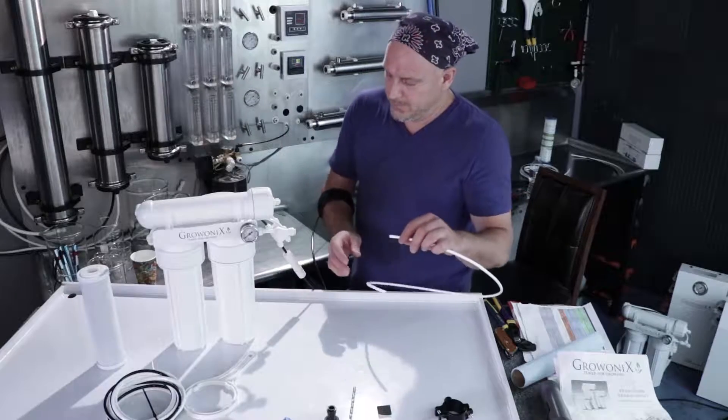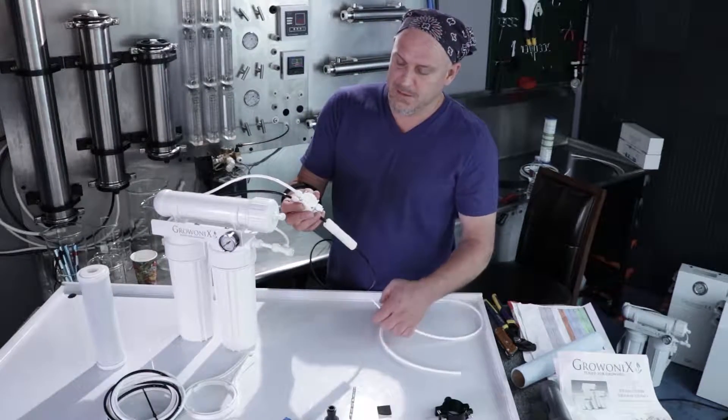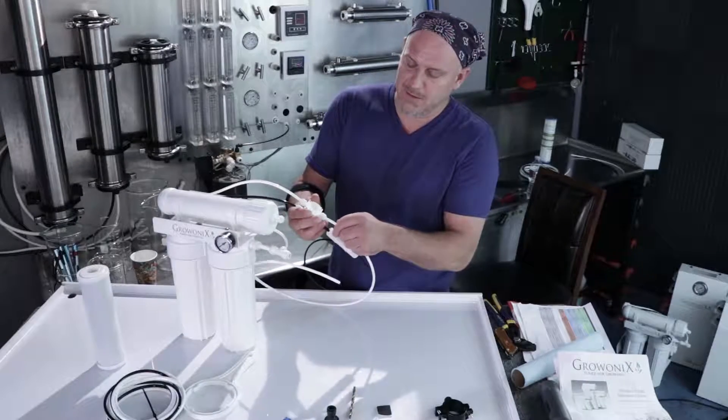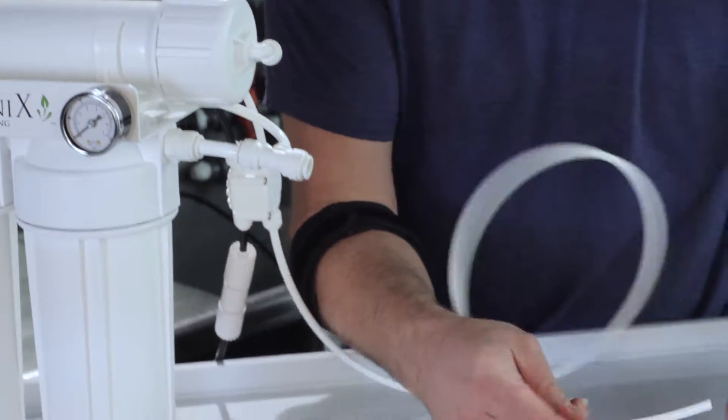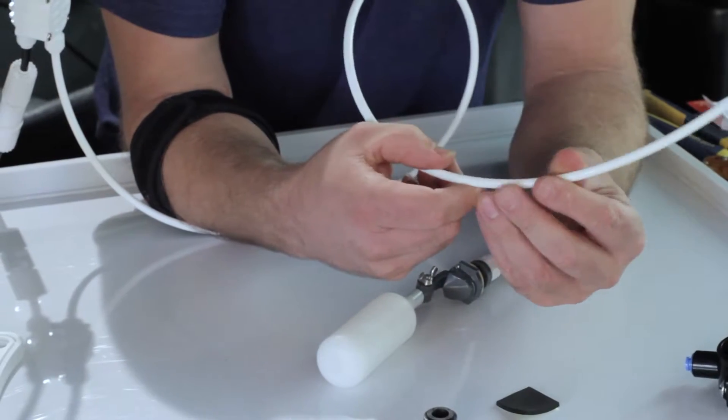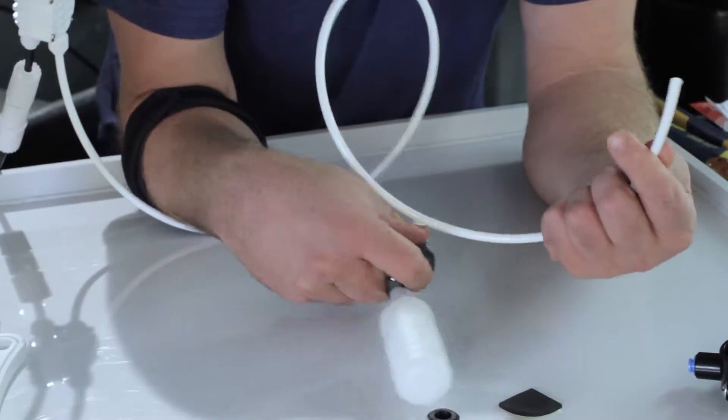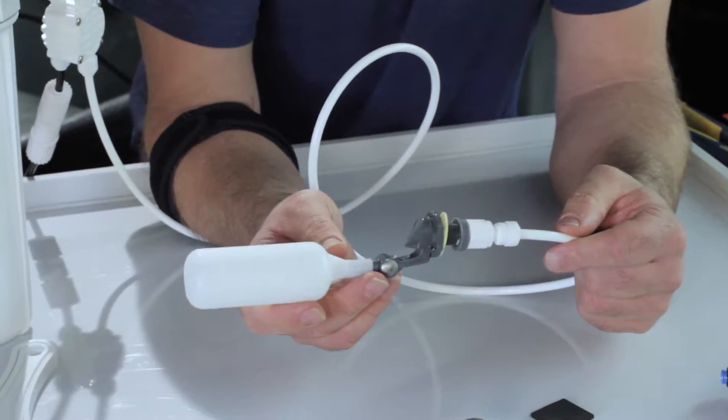Now we're going to hook up the RO, or the permeate line. On this unit, it's going to hook up right to the auto shutoff valve, the ASV. Now the other end of the permeate line can go to a storage tank or a reservoir, a bladder tank, a bottle. If you're going to use it with a float valve, you would just plumb it into a float valve.